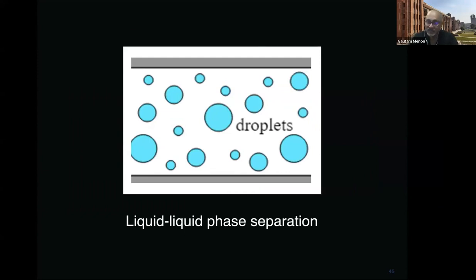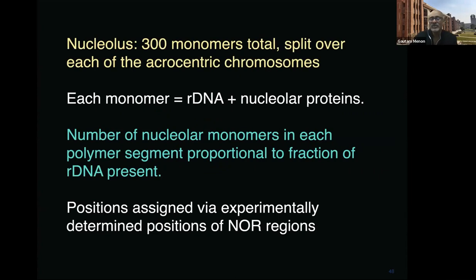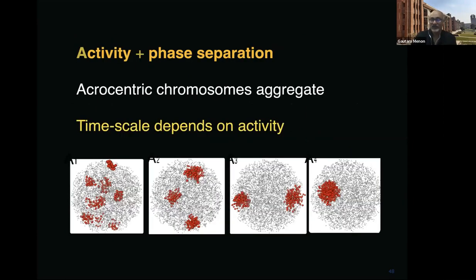The most significant idea here is that the formation of the nucleolus is somewhat like liquid-liquid phase separation — it forms a multi-layered biomolecular condensate through liquid-liquid phase separation. Chris Brangwynne's group has contributed a lot to this. These are all liquids, but one type consistent with the nucleolus has formed at somewhat larger density inside the nucleolus. We model the nucleolus in terms of monomers added to the chromosomes we already have: each monomer represents ribosomal DNA, nucleolar proteins, etc., proportional to the fraction of DNA present, with positions based on where nucleolar organizing regions are.